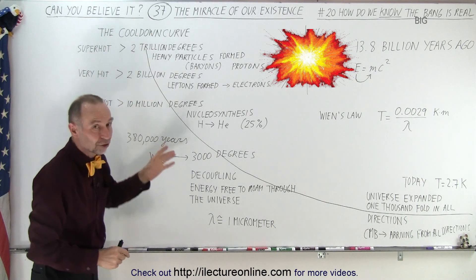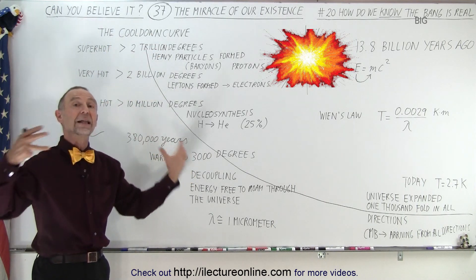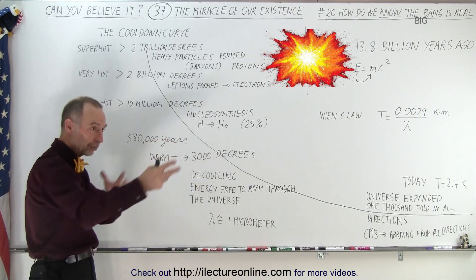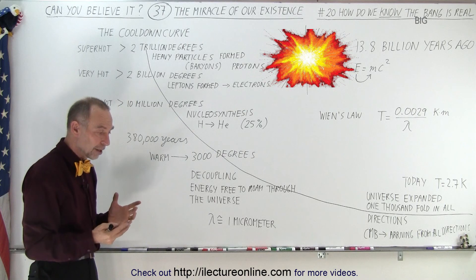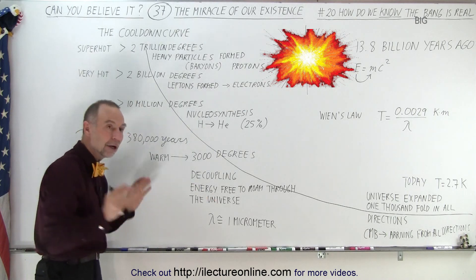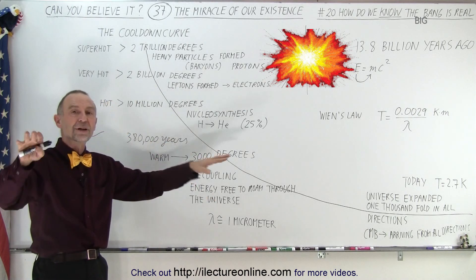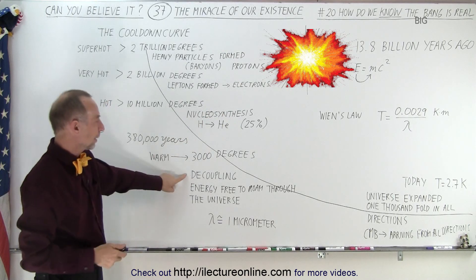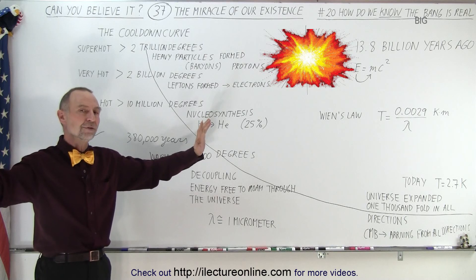And the energy that was left over, and that's the critical part, because there was so much energy initially that only a portion of that energy turned into matter. There was a lot of that energy left over. That energy was moving around bouncing between the protons, the electrons, and the alpha particles. But once they joined together, now that radiation could just freely move through the universe unhindered, and that's called the decoupling period, where energy was now free to roam the universe.